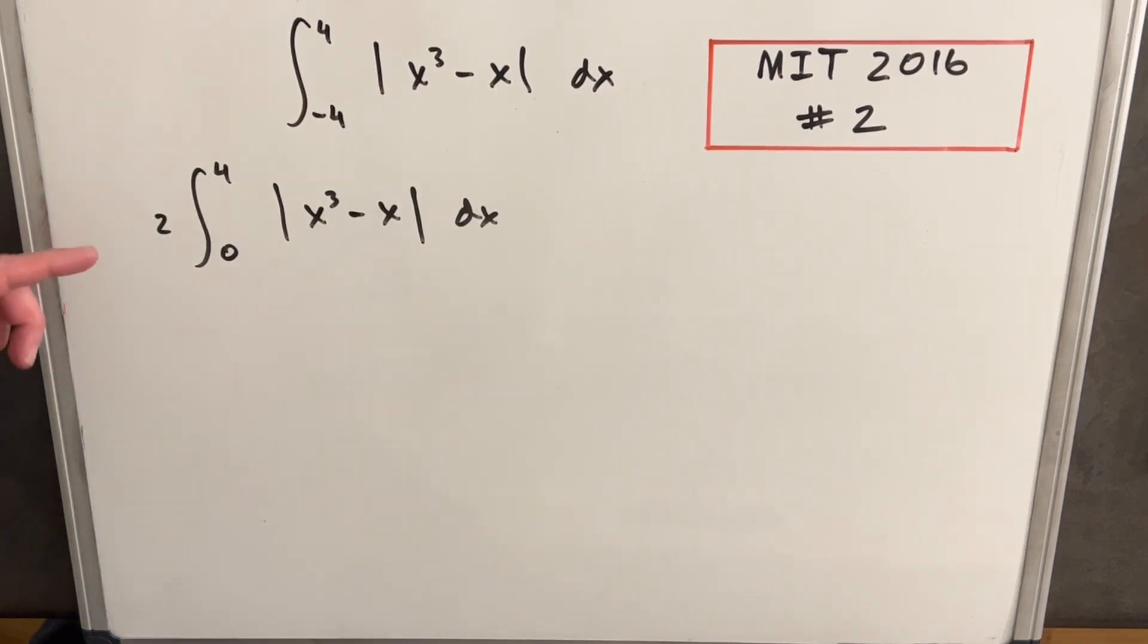And I got to confess, the first time I did this, I did it fast. And I just thought, well, our bounds are from zero to four. So this is always positive, so I can just remove the absolute value. But that's actually not the case.